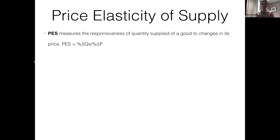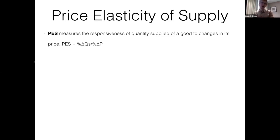PES, or price elasticity of supply, measures the responsiveness of quantity supplied — how much does quantity supplied change — of a good to changes in its price. Suppose there's a good; let's take watches as an example. The price of watches changes, either up or down, and what PES measures is how much does the quantity supplied change as a result of this price change.